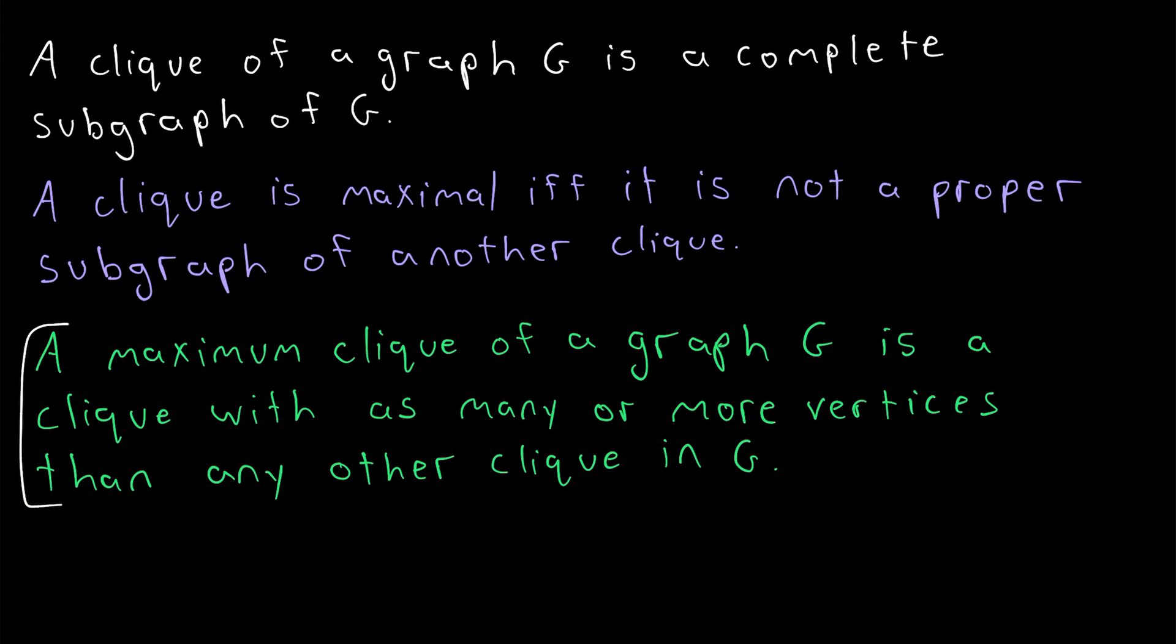And then in green, we have the definition of a maximum clique. A maximum clique of a graph is a clique with as many or more vertices than any other clique in the graph. That should seem pretty reasonable based on the word maximum. It's a clique in the graph such that there are no cliques with more vertices.